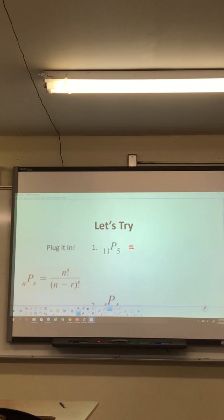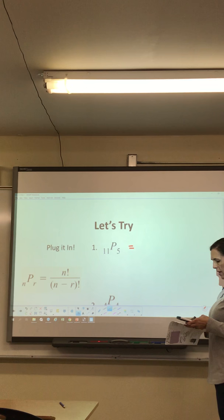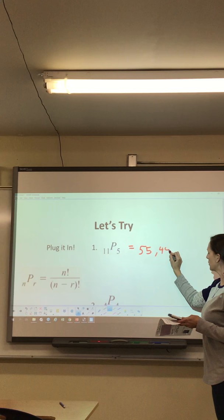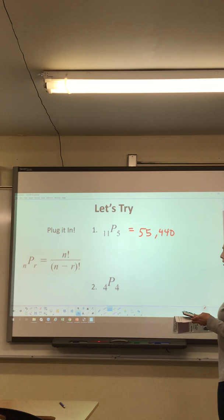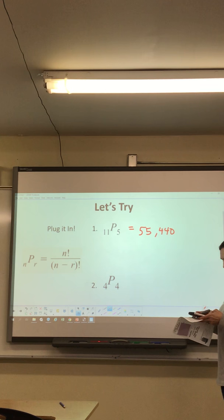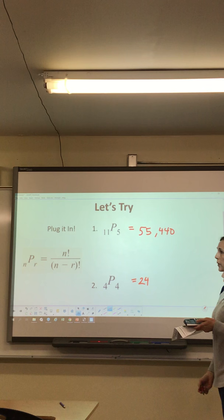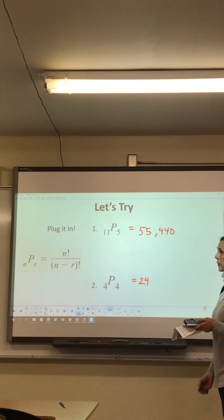Let's practice a few. For 11P5 — the total is 11 and r is 5 — enter 11, go to probability, hit nPr, then 5. You should get 55,440. For 4P4, you should get 24. Pause the video and practice plugging these into your calculator with the permutation button. You'll need to do this for the quiz and your Delta Math assignment as well.